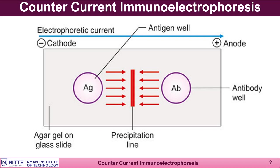Generally, the antibody-loaded side well is connected to the positive pole and the antigen-loaded side is connected to the negative pole. Under the given condition of acetate buffer at pH 7.2 to 7.5, the antigen under test will be negatively charged and the antibody will be positively charged. So the antibody and antigens, under the presence of an electric field, will move towards each other to form a precipitin band.